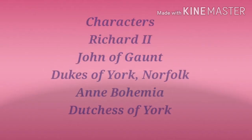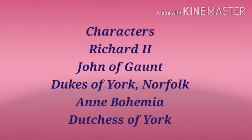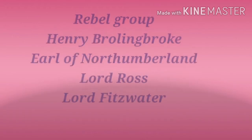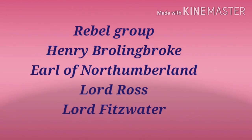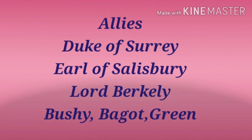Major characters of this play are King Richard II, John of Gaunt who is the uncle and Duke of Lancaster, the Duke of York, Thomas Mowbray who is the Duke of Norfolk, the Queen, and the Duchess of York. There is also a rebel group which includes Henry, Earl of Northumberland, Lord Ross, Lord Fitzwater, and a group of allies including the Duke of Surrey, Earl of Salisbury, Lord Berkeley, Bushy, Bagot, and Green.